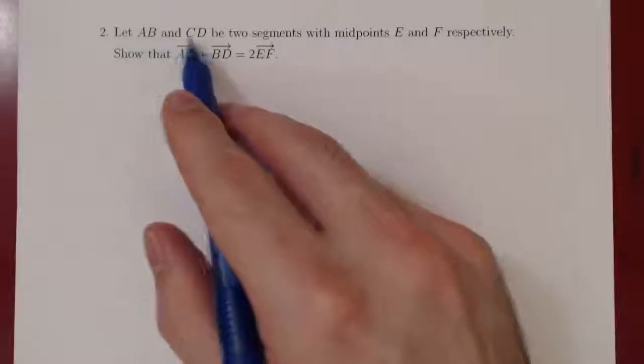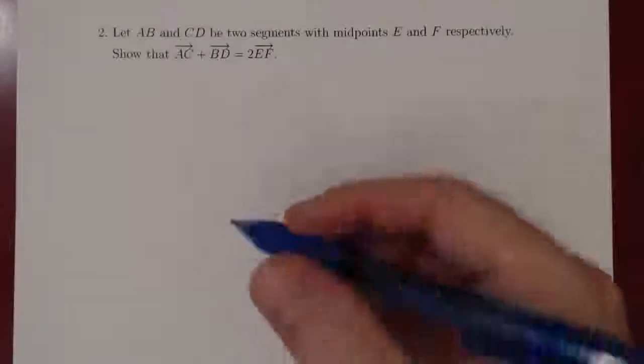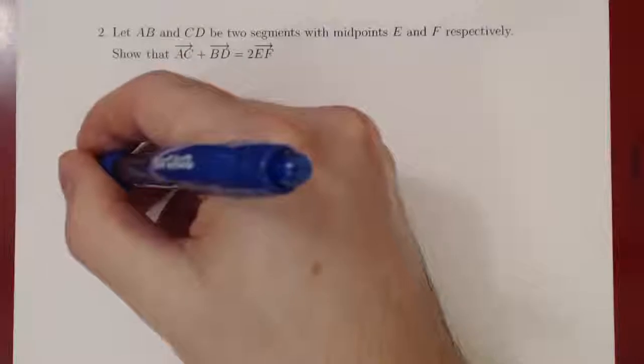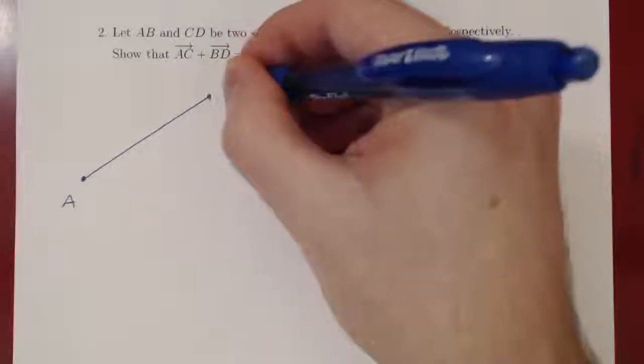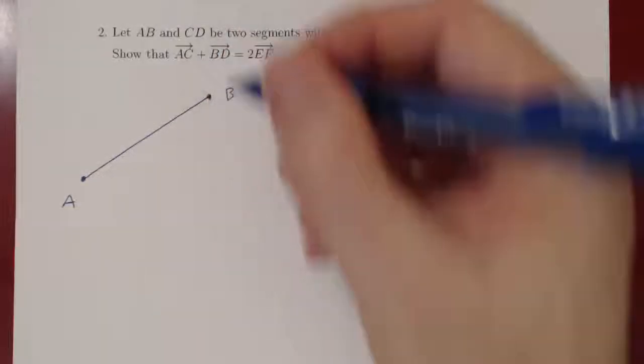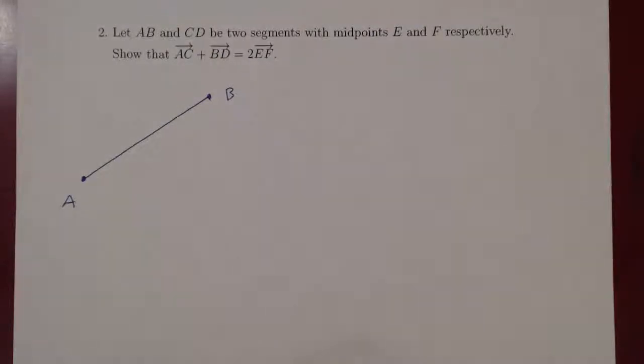We're given two segments AB and CD. They're two segments in space. Again, it could be in the XY plane or in three-dimensional space, it doesn't matter. So suppose that segment AB is this segment. So this is point A, this is point B. And then we have segment CD. The segments may be of different lengths, they could also be not parallel.